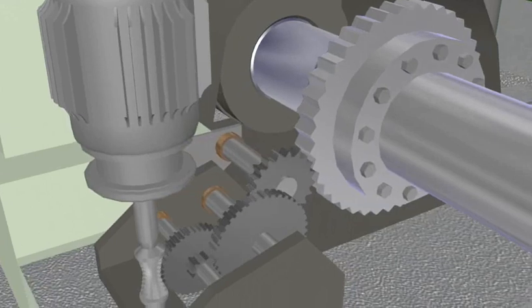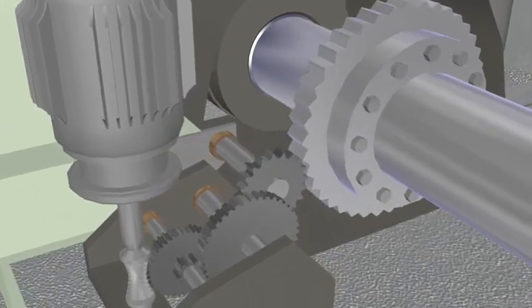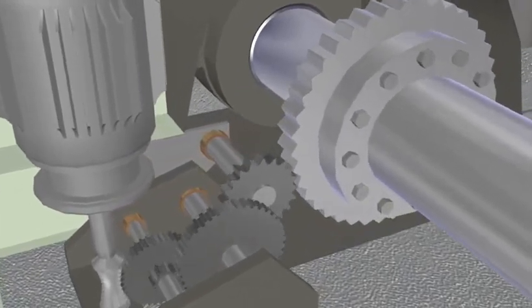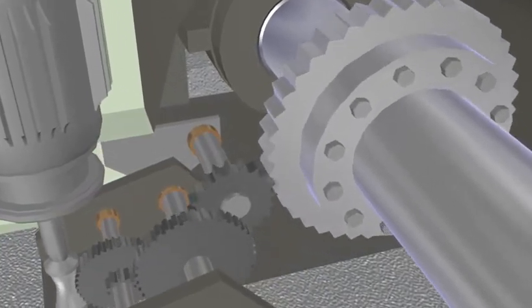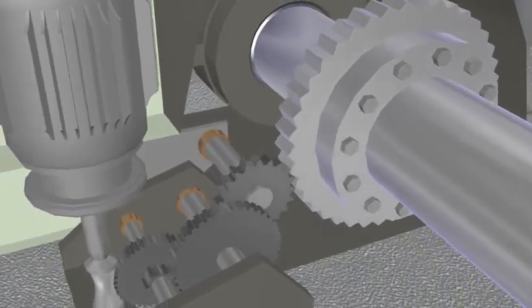The turning gear provides a slow rotation of approximately three revolutions per minute to correct rotor bowing or sagging due to uneven cooling or as a result of the rotor's own weight.